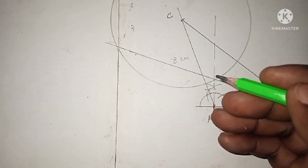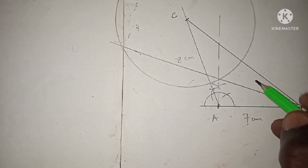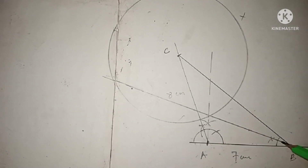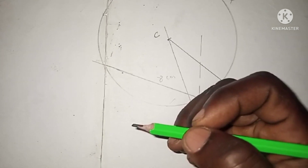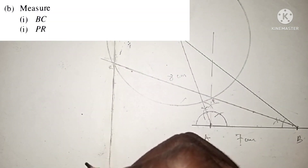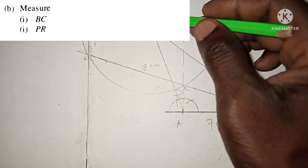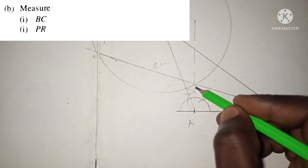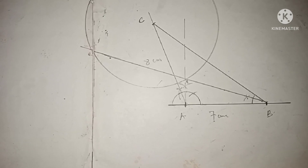Now take the required measurements. Measure BC: place your ruler from B to C and write down the measurement. Also find points P and R where locus X and locus Y intersect, and measure the length PR. Write your answers in the comment section below, and if you have any issues, comment down for help.